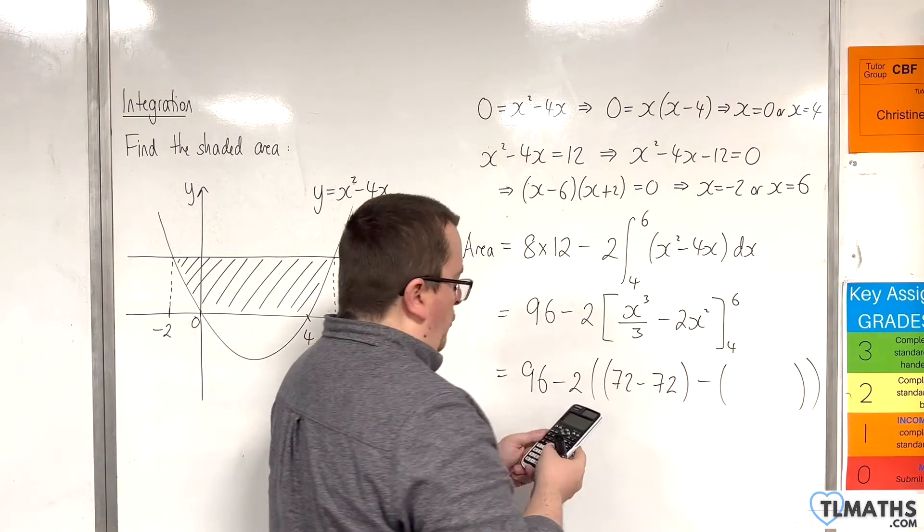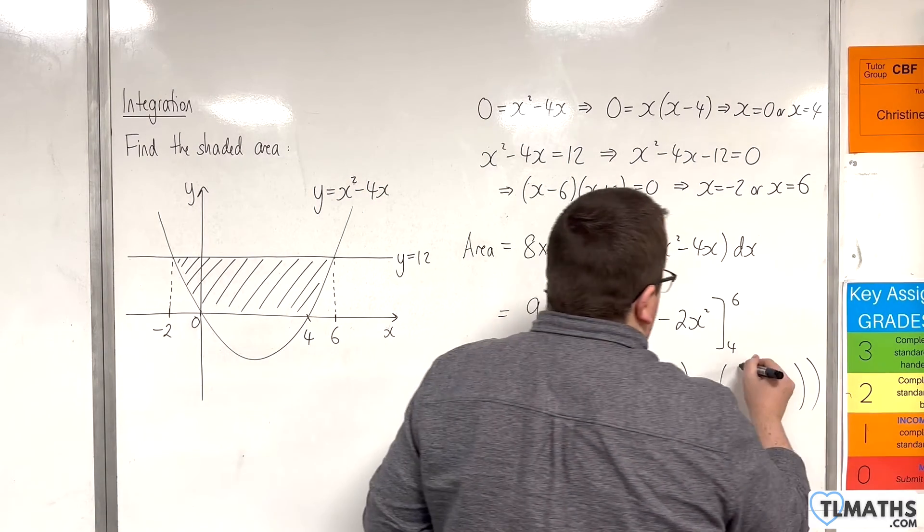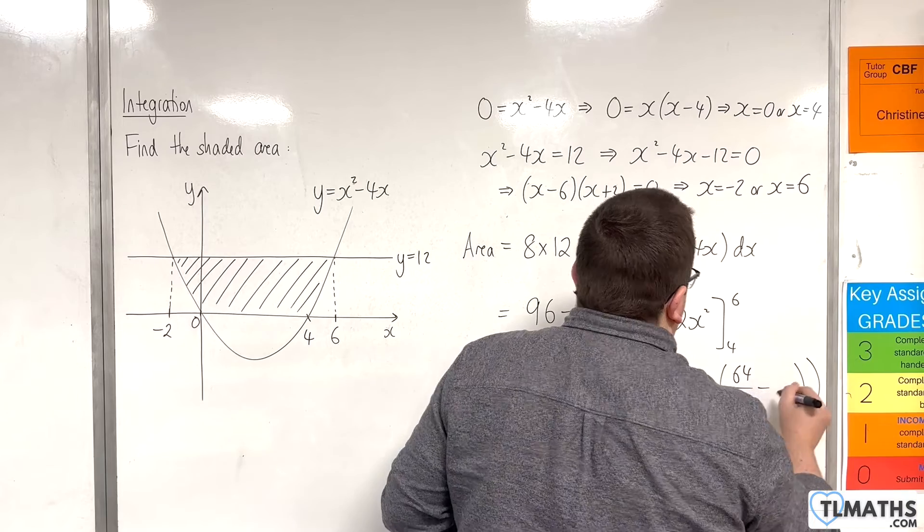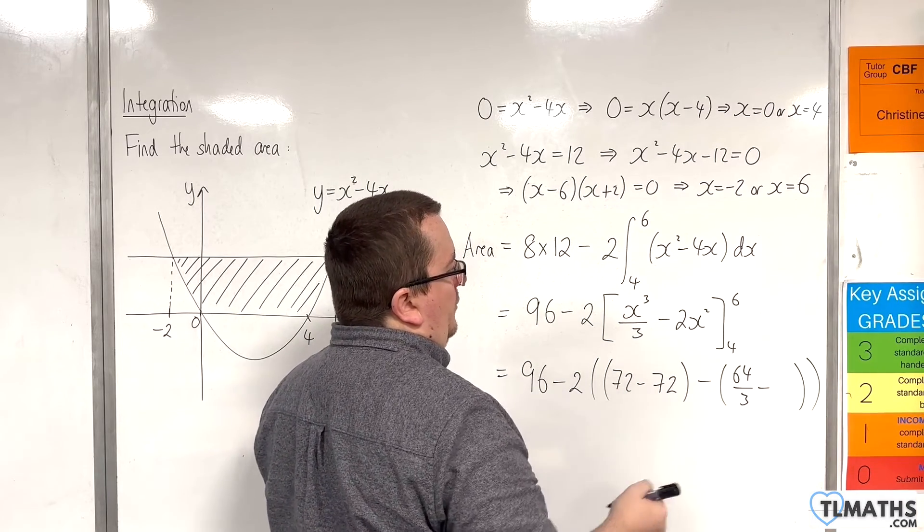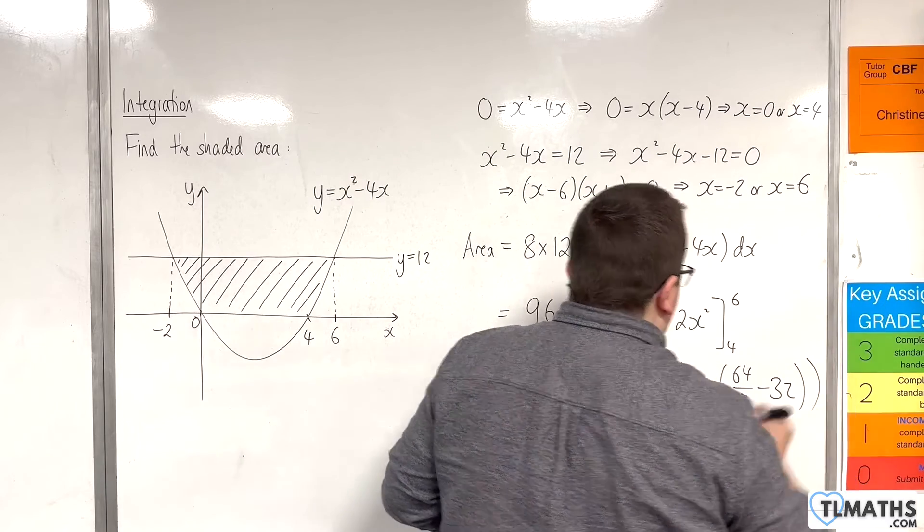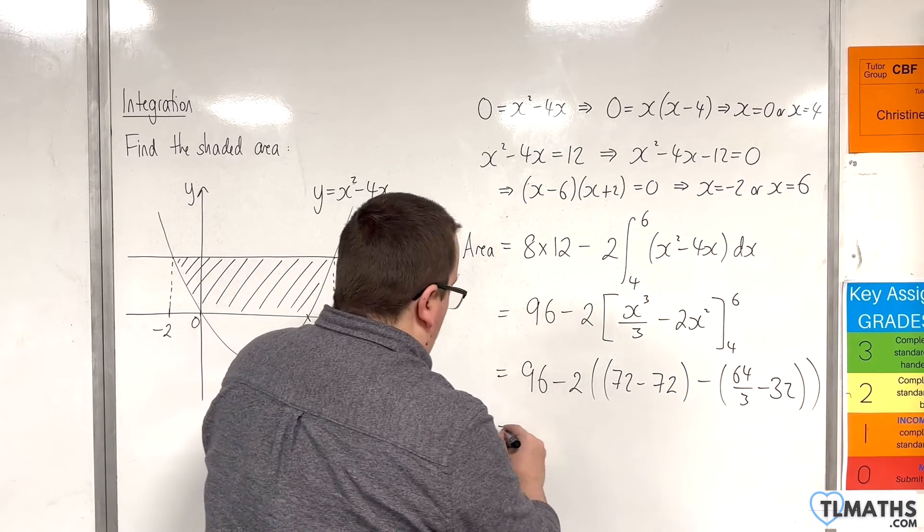And then substituting in 4, we're going to have 4 cubed, so 64 over 3, take away two lots of 4 squared, so two lots of 16, so that's 32.